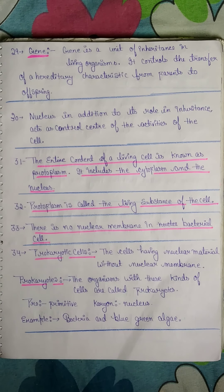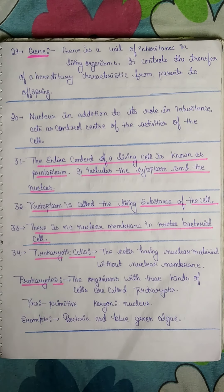Point 31: The entire content of a living cell is known as protoplasm. It includes cytoplasm and the nucleus. Point 32: Protoplasm is called the living substance of the cell.